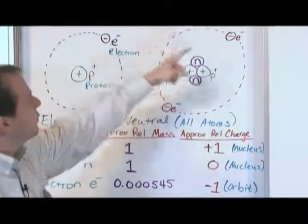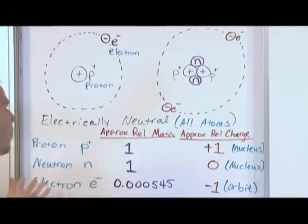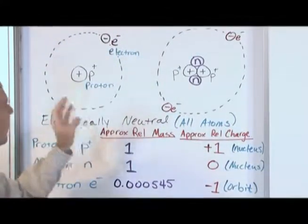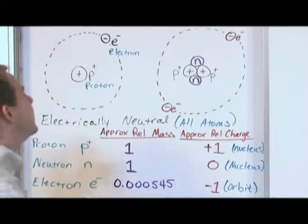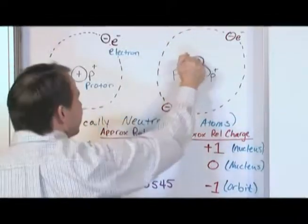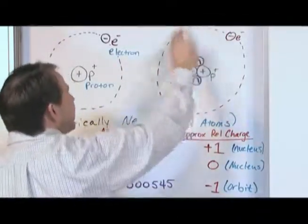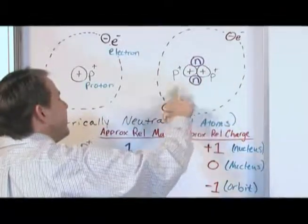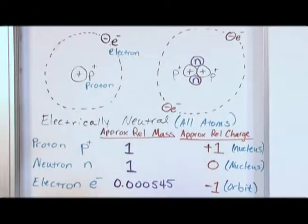So if you think about this solar system model here, which I told you is not quite right when you really start digging into it, but it's pretty good to visualize it, the mass of the atom is concentrated in the center. This stuff going around doesn't have much mass, but it does have equal and opposite charge, and that's what allows the atom to be stable.